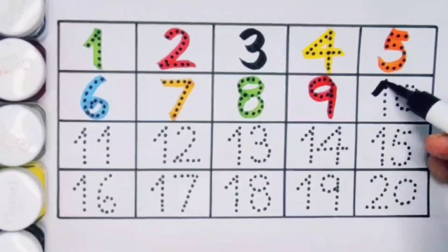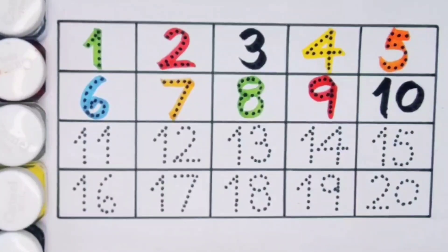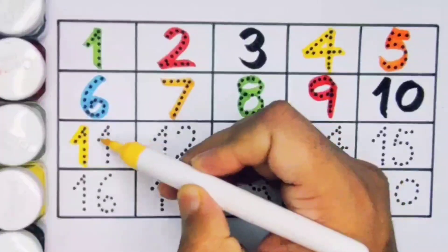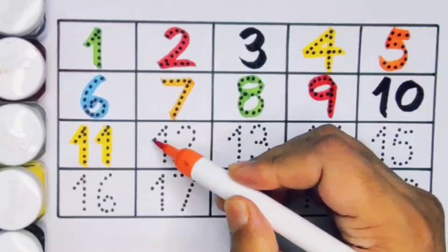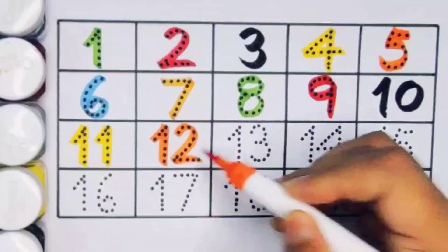Next kids, eleven, one one eleven, number eleven. Next, twelve, one two twelve, number twelve.